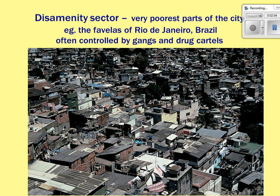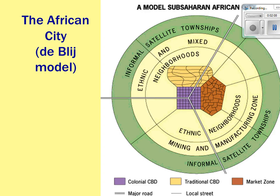In the sub-Saharan African city model, there are three CBDs: the traditional CBD that existed prior to colonialism, the colonial CBD where major roads intersect — reflecting European rule — and a market zone with stalls or tables set up for trade. A key feature is informal satellite townships around the outside, where poor squatter settlements are located. People without much money or even full-time jobs live on the outskirts where there's room to expand.